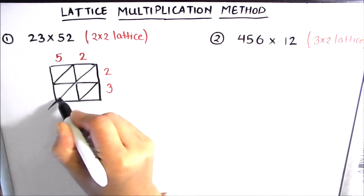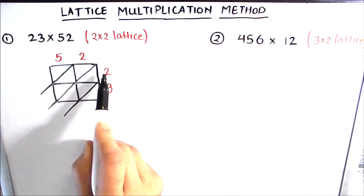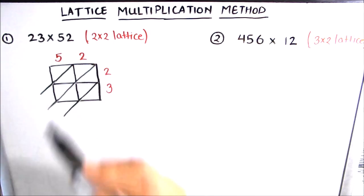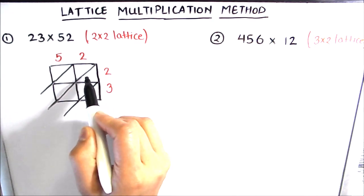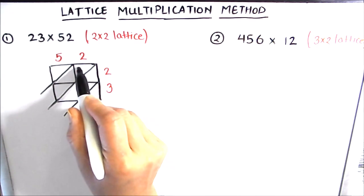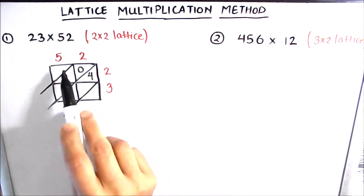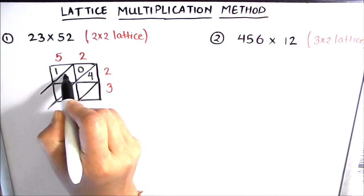We can extend the diagonals out of the box, and now we will start multiplying the numbers. For each cell, we multiply the number along the row by the number along the column. In the first row we have 2, and in the first column we have 2, so 2 times 2 is 4. In a single box we write the answer as two digits, so we write 04. Next, 2 times 5 is 10, so we write 1 and 0.